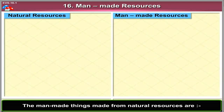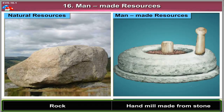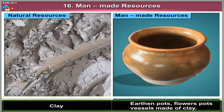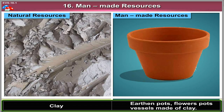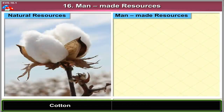The man-made things made from natural resources are: from rock, the man-made resource is a handmill made from stone. From clay, earthen pots, flower pots, and vessels made of clay. From cotton, clothes.